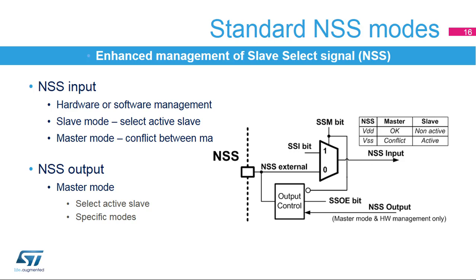The slave select signal, or NSS, is commonly used by the master mode to select the slave node for communication. It is generally used in a multi-slave topology, but it can also be used to synchronize the data flow in a single master-slave pair. The slave select signal can operate either as an input or as an output. The NSS input can be managed externally by hardware or internally by software, depending on the SSM and SSI bits. As a slave, it always works as an input and enables the slave for communication. As a master input, it indicates potential conflicts between masters in a multi-master system. As a master output, it is managed by hardware in a standard or specific control mode. Generally, in standard mode, the master slave select outputs can be easily replaced by GPIOs under software control.